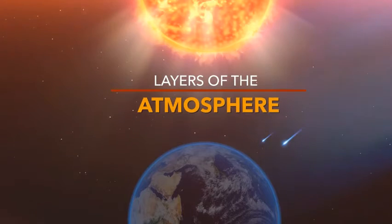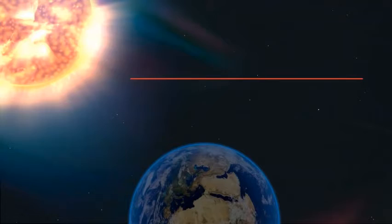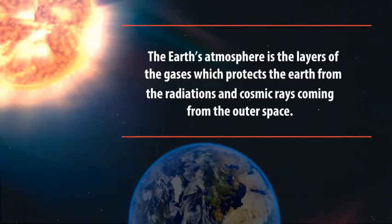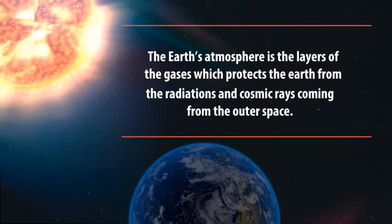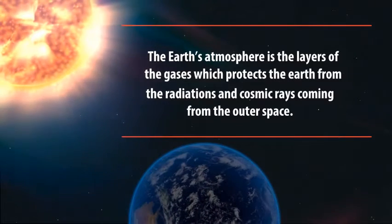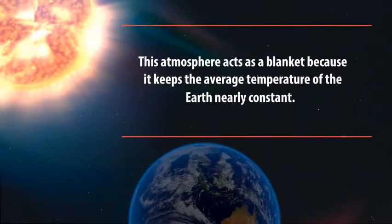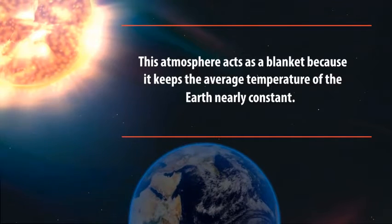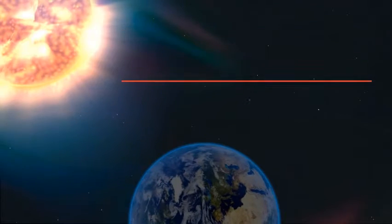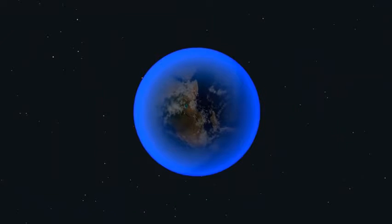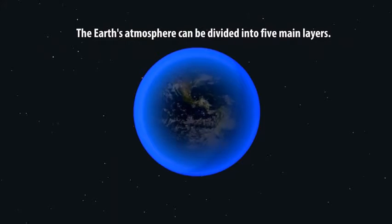We are going to discuss the layers of the atmosphere. The Earth's atmosphere is the layers of gases which protect the Earth from radiation and cosmic rays coming from outer space. This atmosphere acts as a blanket because it keeps the average temperature of the Earth nearly constant. The Earth's atmosphere can be divided into five main layers.